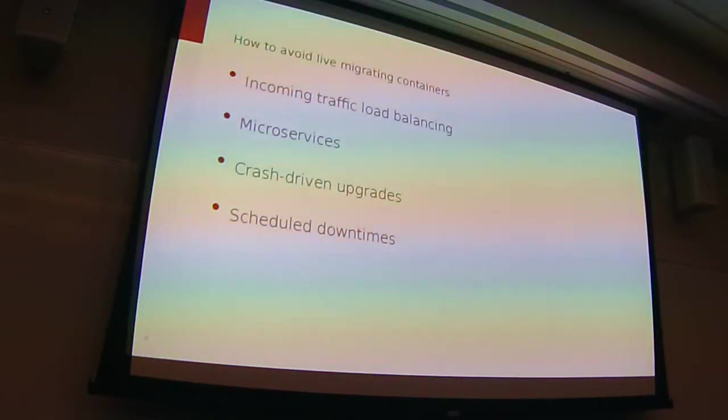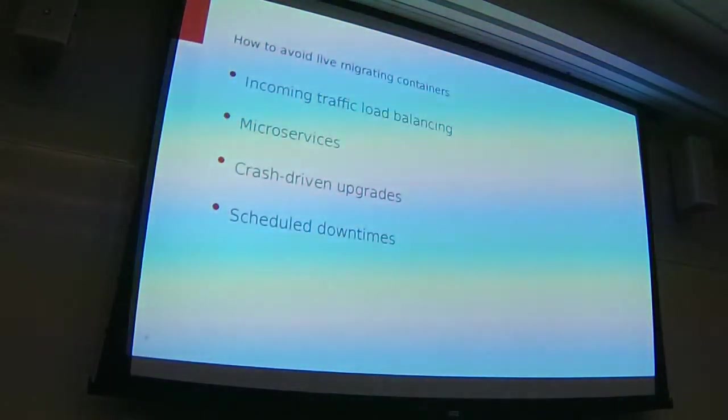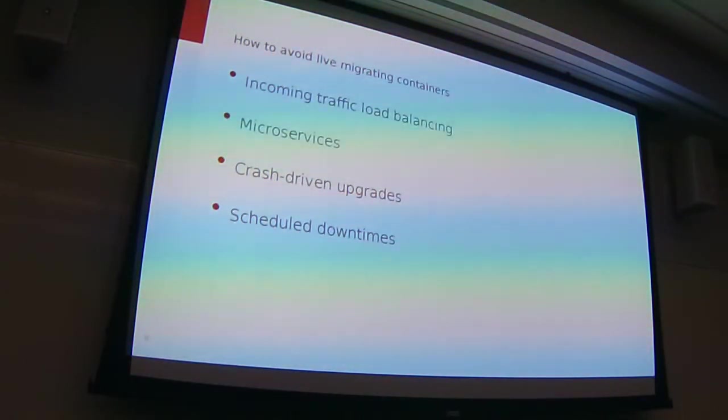One way to avoid live migration is to totally switch to microservices — the model employed by OpenStack, Docker, and some Docker-based projects such as Kubernetes. The idea with microservices is basically you don't have much state with the applications that you run, so you can easily kill them and restart them somewhere else on a different system. A third option to avoid live migration is what we call crash-driven updates: if you want to upgrade the kernel, you just wait for your machine to fail. When it fails, you press the reset button and reboot into the new kernel. It sounds a little bit crazy, but a lot of our customers are using this model.